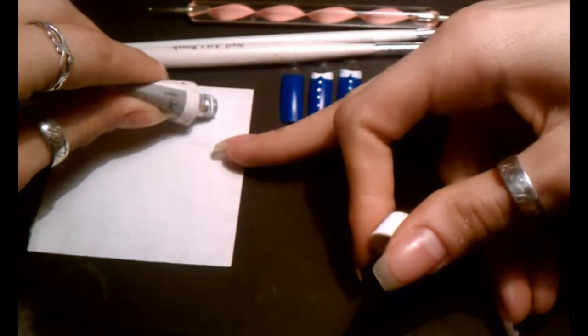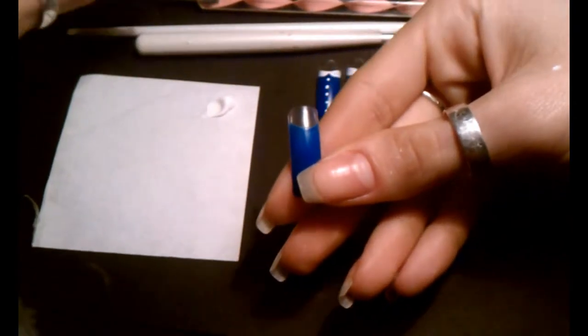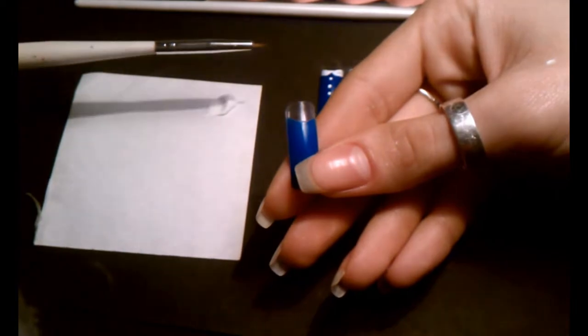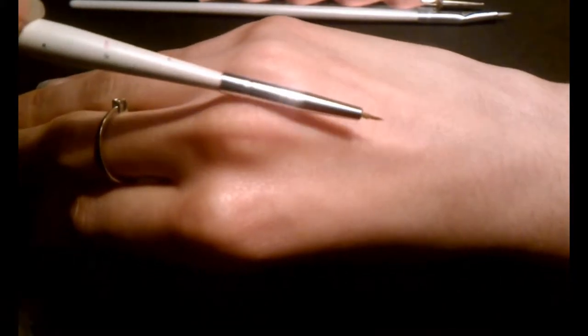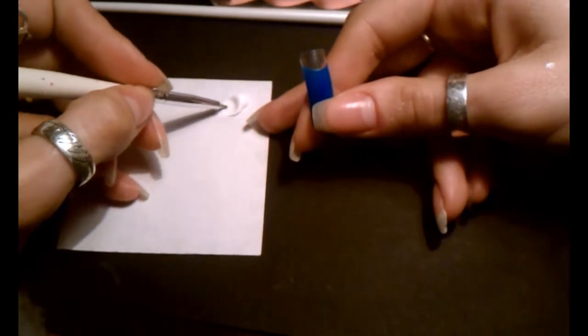I'm taking a sheet of paper and putting some of my paint onto this sheet. Then I'm taking my nail and my skinny brush, and I'm dipping my damp skinny brush straight into the acrylic paint.